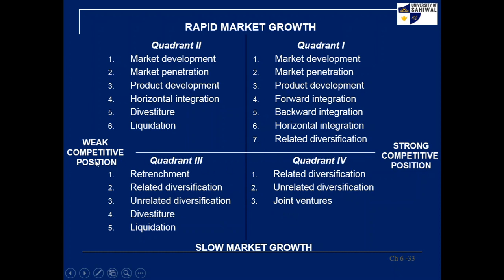For example, if we have a weak competitive position and slow market growth, we fall into quadrant three. The strategies available are divestiture, liquidation, unrelated diversification, related diversification, and retrenchment. If we have slow market growth but a strong competitive position, the options include related diversification, unrelated diversification, and joint ventures.